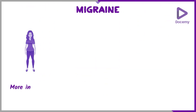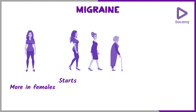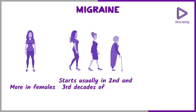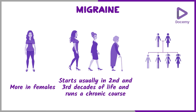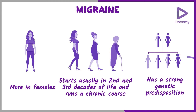Migraine is more common in females. It starts in the second and third decade of life but can run a very chronic course. It runs in families and has a strong genetic predisposition.